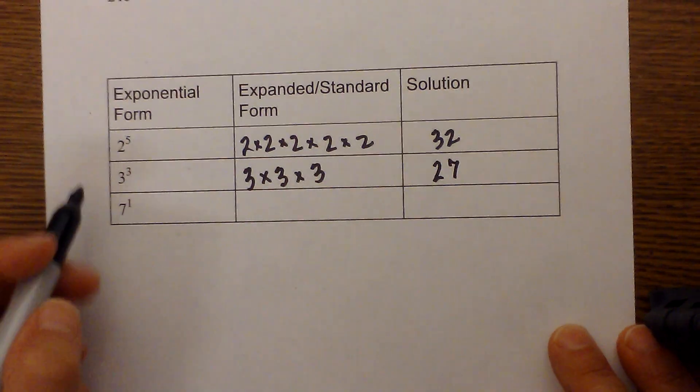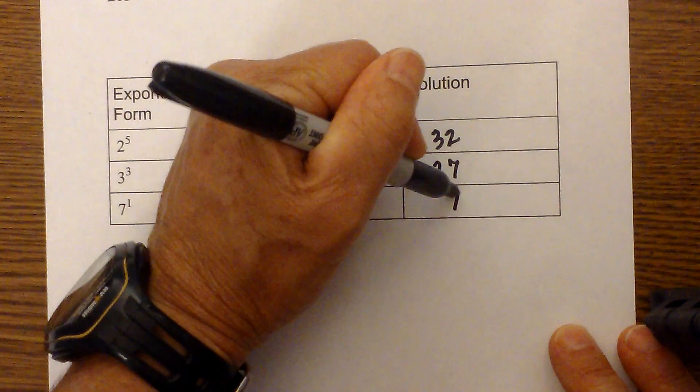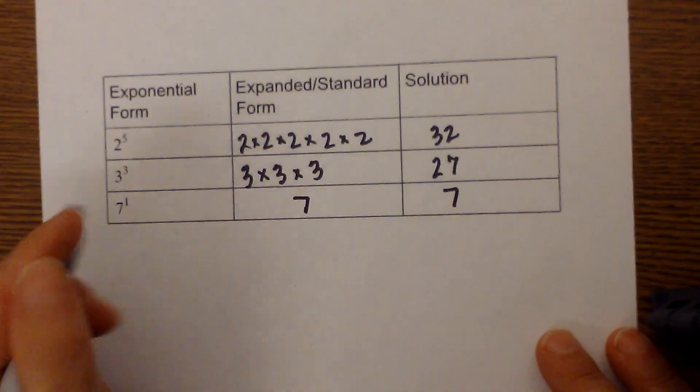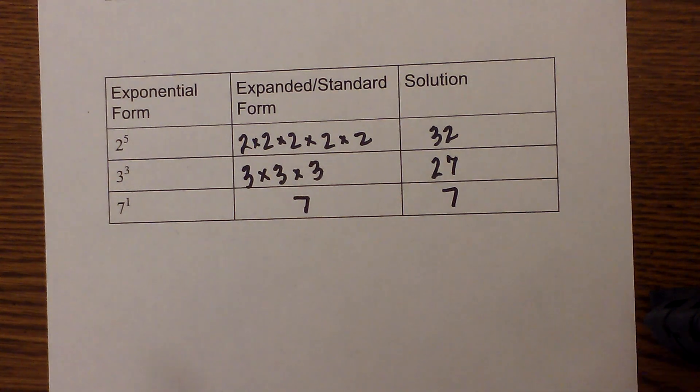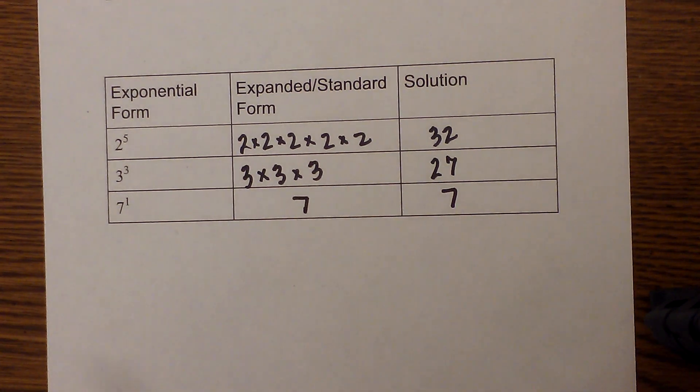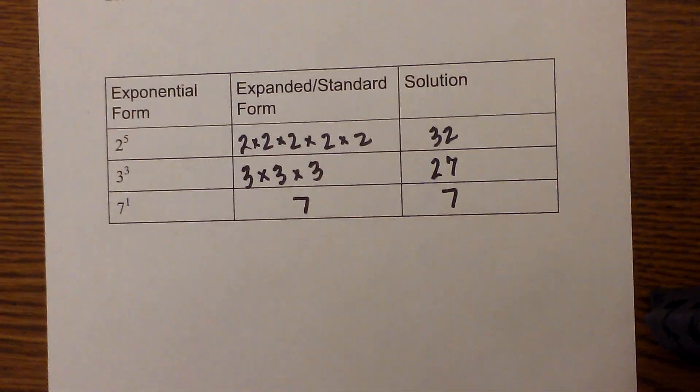And finally, 7 to the 1—you just write that as 7, and that would be 7. You don't really see that very often but I thought I would throw that in. Anyway, I hope that helps with the basics of an exponent.